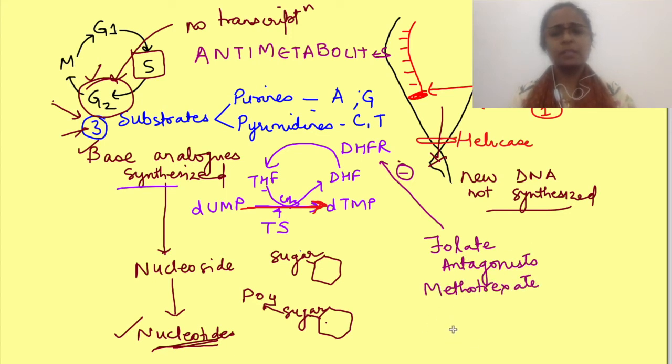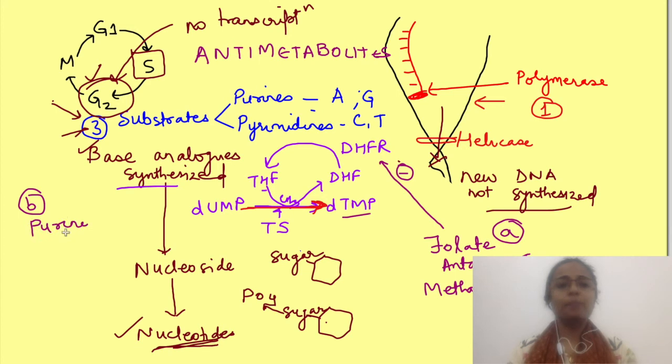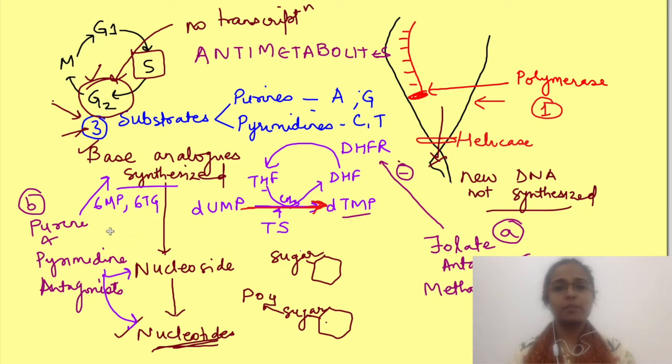So if this enzyme is blocked, the synthesis of dTMP cannot occur further. Then there are purine and pyrimidine antagonists which are either the purine-pyrimidine base analogues or nucleoside or nucleotide analogues. Examples of these base analogues include 6-mercaptopurine and 6-thioguanine. These inhibit critical steps in the synthesis of purines. Then there is 5-fluorouracil which inhibits thymidylate synthase.